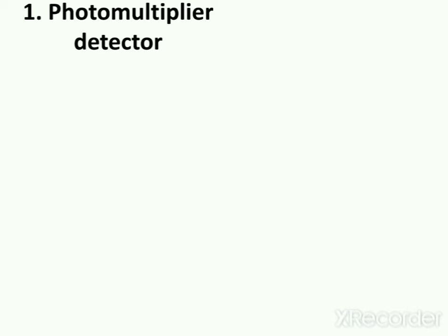Now I am going to discuss the construction and working of the photomultiplier detector. The photomultiplier detector is the most widely used detector in ultraviolet visible spectrophotometer. As the name suggests, it works on the fundamental of multiplication of photoelectrons. The principle employed in this detector is multiplication of photoelectrons by secondary emission of electrons.